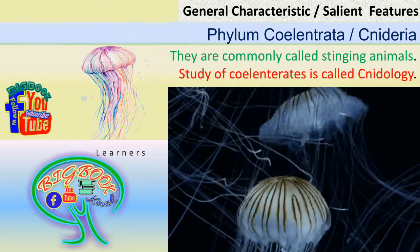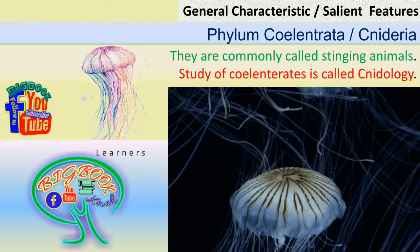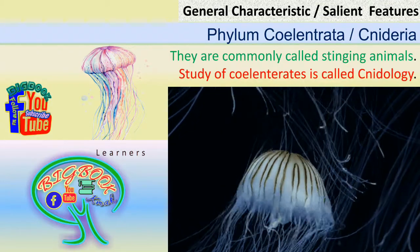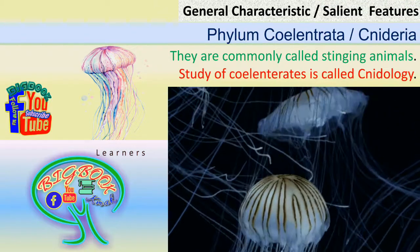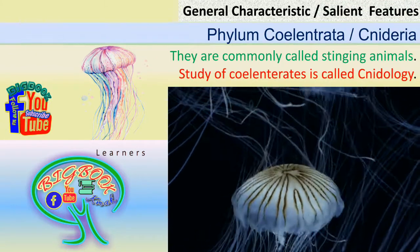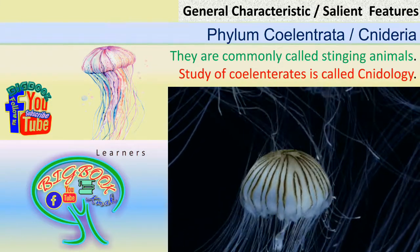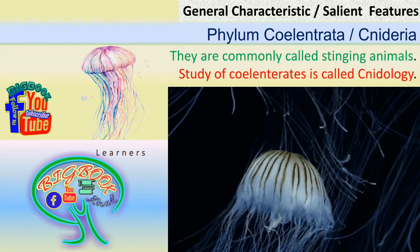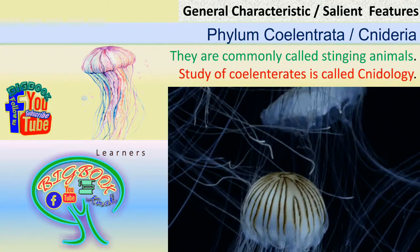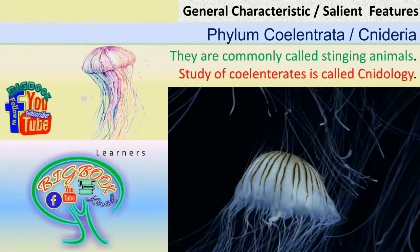Welcome to Big Book. In this presentation we are going to discuss the phylum Coelenterata or Cnidaria, which belongs to the invertebrate animals. We will discuss the general characteristics or salient features of this phylum. These organisms are also called stinging animals, and the study of Coelenterata specifically considering their stinging nature is called cnidology.